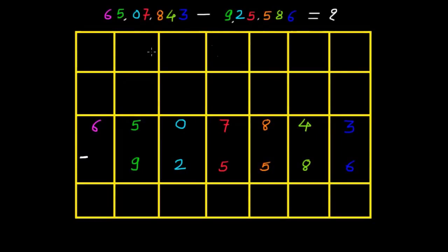Let's have fun with the subtraction of 6 and 7 digit numbers. This method is similar to our 2 digit and 3 digit numbers. Let's subtract 657,843 minus 925,586.